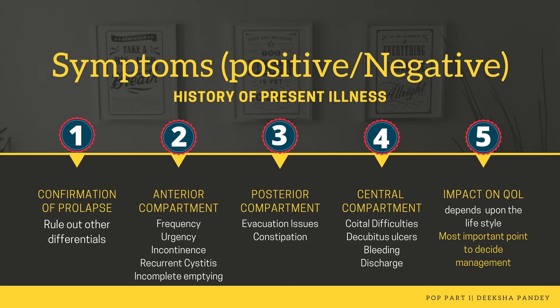Anterior compartment symptoms are related to the bladder and include recurrent episodes of cystitis because of residual urine. The patient may also complain of a feeling of incomplete voiding, or stress or urge incontinence. Posterior compartment symptoms include constipation and a feeling of incomplete evacuation. The patient may also give a history of finger splinting of the vagina to complete defecation. For the central compartment, if the patient is sexually active, she might complain of coital difficulties. There can also be postmenopausal bleeding due to a decubitus ulcer, and decubitus ulcers can also present with foul-smelling discharge per vaginum.